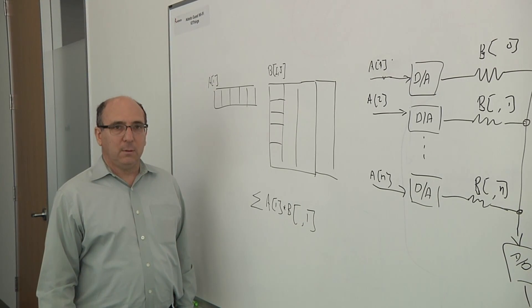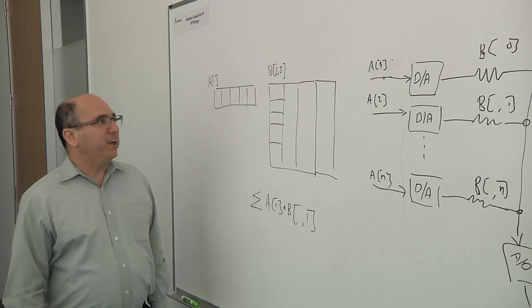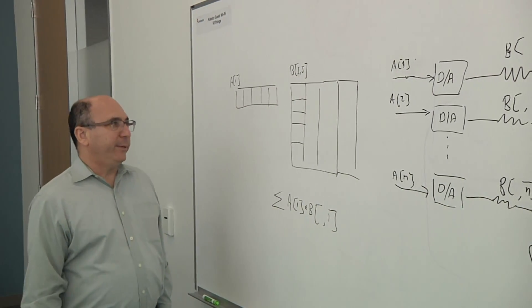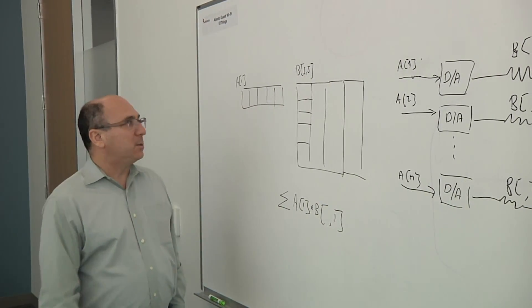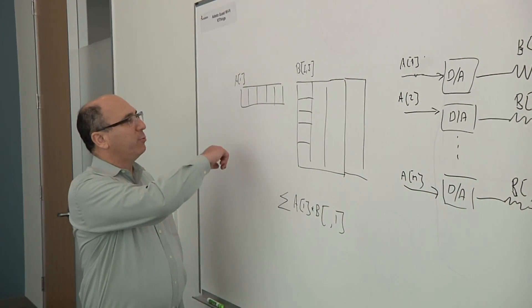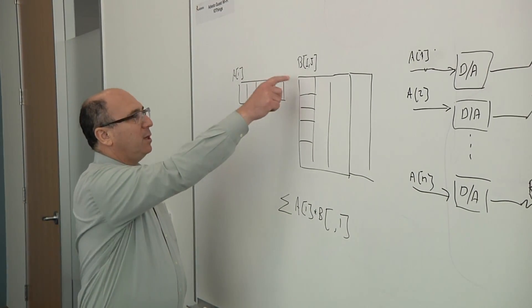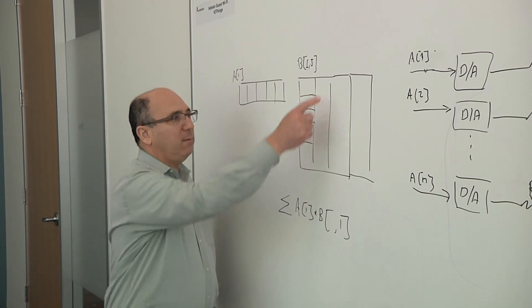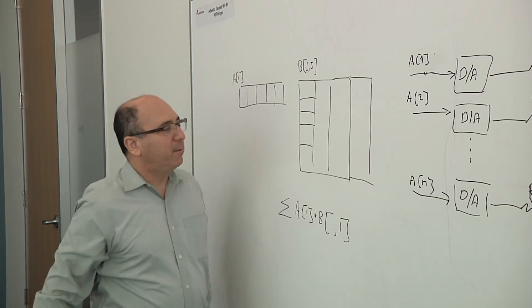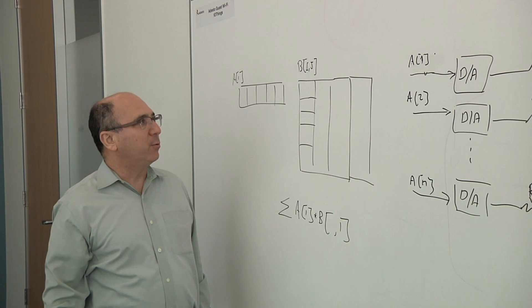Why don't you draw this out for us? Sure. So the basic operation of AI computation is a vector matrix multiplication. So we take a vector of inputs and multiply it by the vectors, the vertical vectors in a matrix.